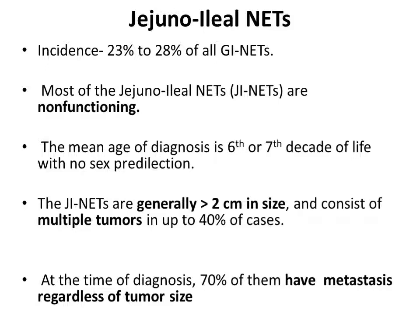After duodenum, we will learn about jejunoileal NETs. Their incidence is 23 to 28% of all GI NETs. Most jejunoileal NETs are non-functioning. The mean age of diagnosis is the 6th or 7th decade of life with no sex predilection. The jejunoileal NETs are generally more than 2 cm in size and consist of multiple tumors in up to 40% of cases. At the time of diagnosis, 70% of them have metastasis regardless of tumor size.